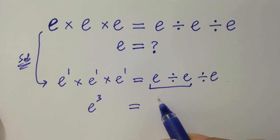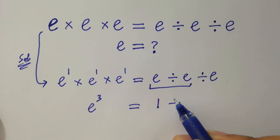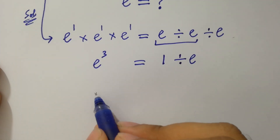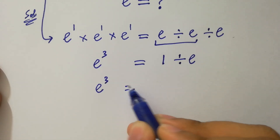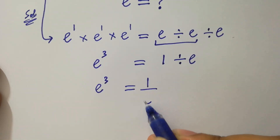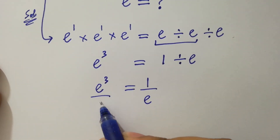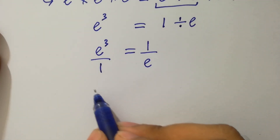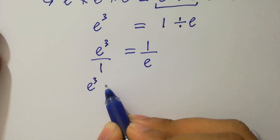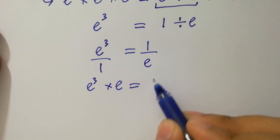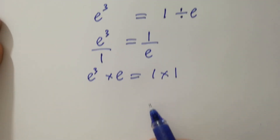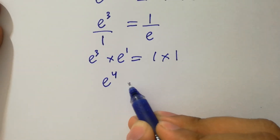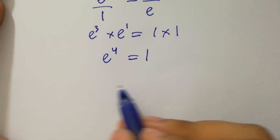On the right hand side, e divided by e equals 1, so it will be 1 divided by e. So we have e cubed equals 1 over e. By cross multiplication, it will be e cubed times e equals 1 times 1.